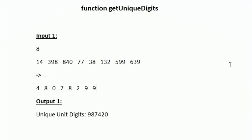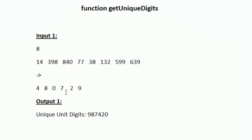Now what we are going to do is remove the duplicates. We can see that the digit 8 has been repeated, so we have to remove it. The digit 9 has also been repeated, so again we have to remove it. Now we have removed all the duplicates and we have all the unique unit digits.